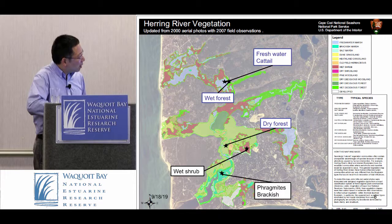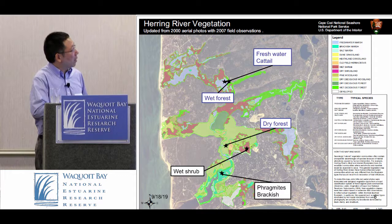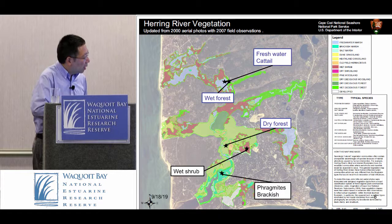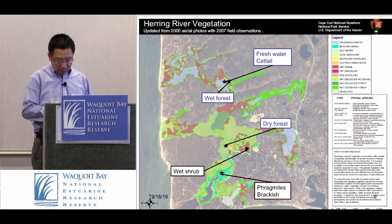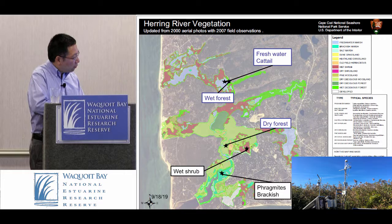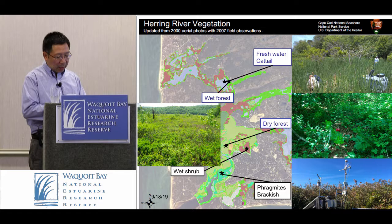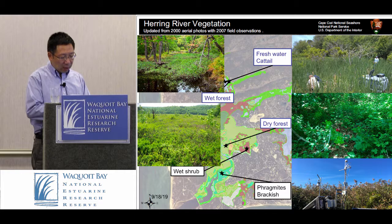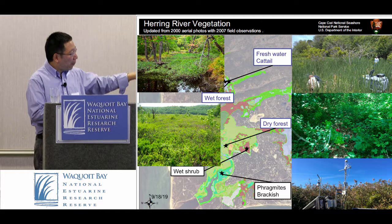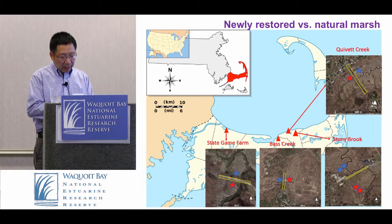Here is what the current system looks like. There are many dikes. After being diked for about 100 years, the upland system has become very compact — a lot of freshwater cattail systems, wet forest, dry forest, some phragmite, and some wet shrub. My group went to the field and made measurements. For example, this phragmite side looks like this. We went to the dry forest, made greenhouse gas measurements, went to the wet shrub, the phragmite-cattail — which is Typha — and the wet forest. We measured greenhouse gases in all the systems and tried to compare those systems with the natural salt marsh.